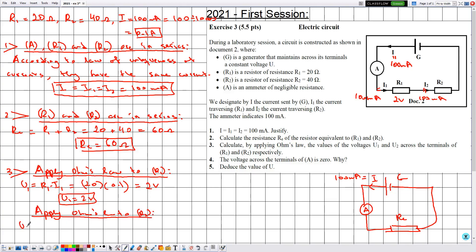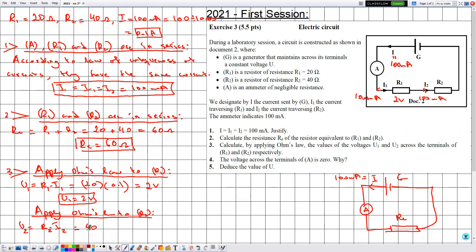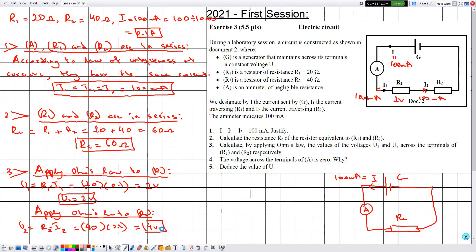Applying Ohm's law: U2 equals R2 times I2 equals 40 times 0.1, which equals 4 volts. Notice both resistors are traversed by the same current of 0.1 amperes. Since R2 is greater than R1, this resistor requires more voltage to be traversed by the same current. So U1 equals 2 volts and U2 equals 4 volts.